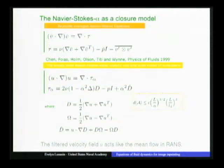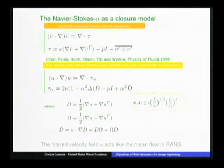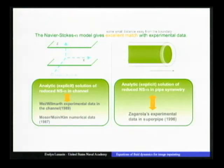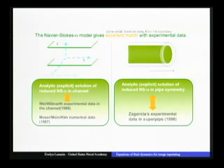How can we say that Navier-Stokes alpha is a closure model? We take the Reynolds-averaged Navier-Stokes equation and look at the steady-state solution of the Navier-Stokes alpha. By inspection, we can see that the filtered velocity field U — the smooth velocity field in the alpha model — acts like the mean flow in the Reynolds-averaged Navier-Stokes. To test the validity of this ansatz, Chen et al. in 1998 found the explicit solution to the Navier-Stokes alpha model in channel and pipe geometries and compared it to experimental data from channel flow, Zagarola's super pipe experiments, and Moser, Kim, and Mansour DNS data for higher Reynolds numbers, finding excellent agreement.